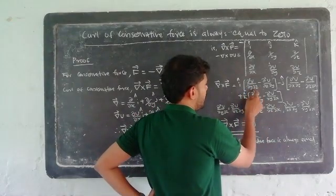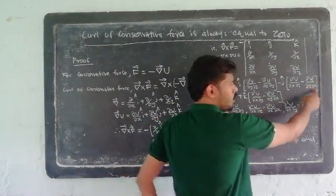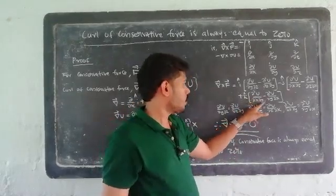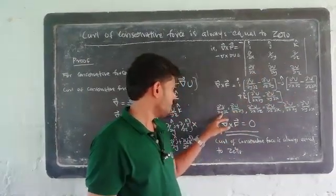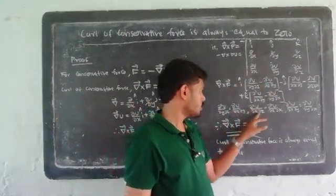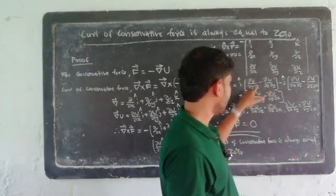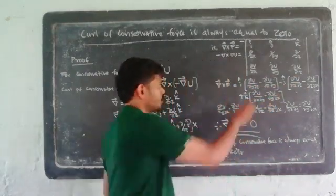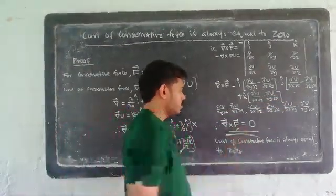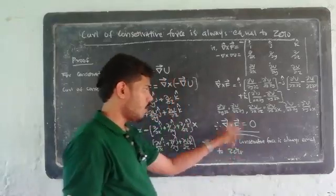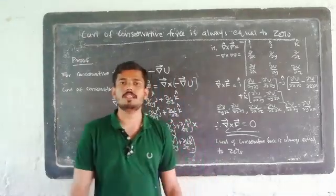We get terms like ∂²U/∂y∂z and ∂²U/∂z∂y. Since ∂²U/∂x∂y equals ∂²U/∂y∂x by equality of mixed partial derivatives, all such cross terms cancel. Therefore, del cross F is always equal to zero.